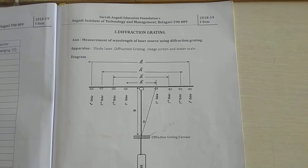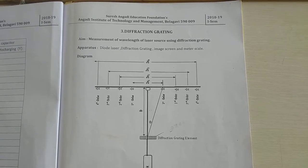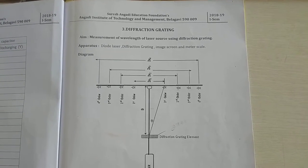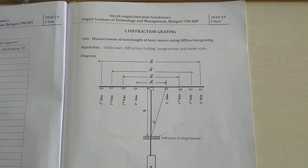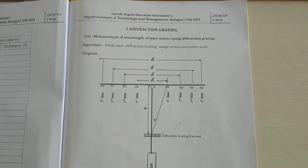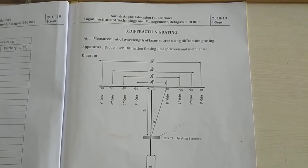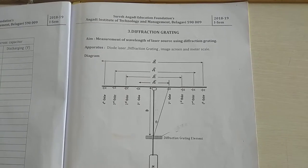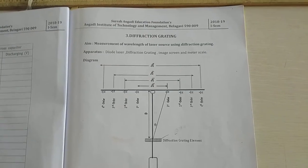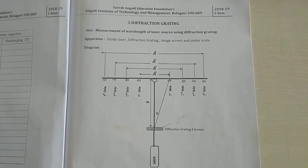Today we are going to start the experiment on diffraction grating. The aim of the experiment is measurement of the wavelength of a laser source using a diffraction grating element.